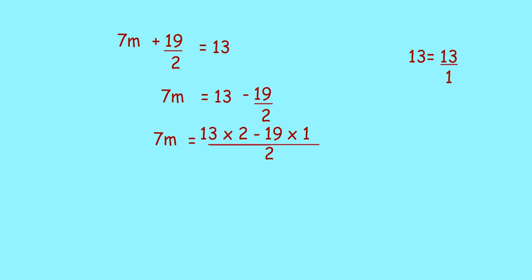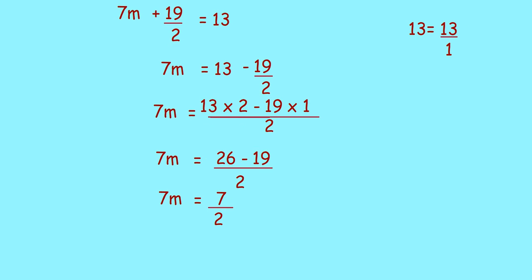Now, what will you get? 7m is equal to 26 minus 19 by 2. What is 26 minus 19? It is 7. So, 7m is equal to 7 by 2.